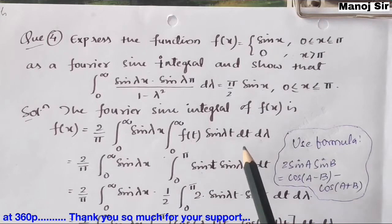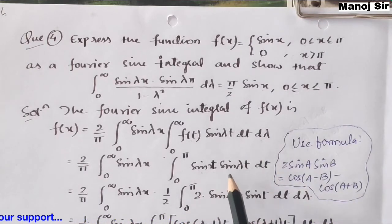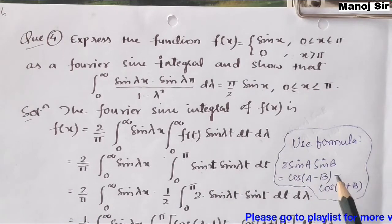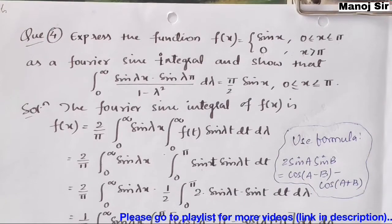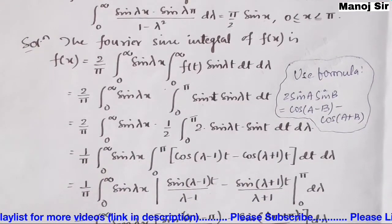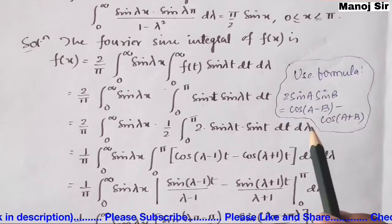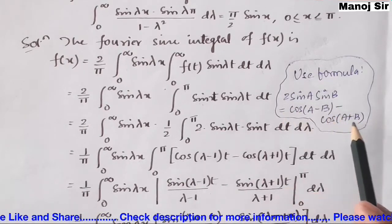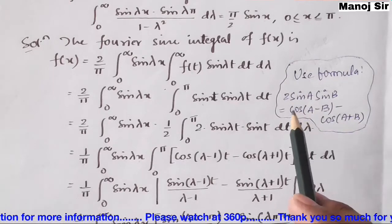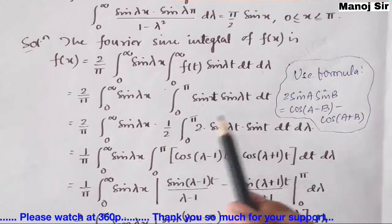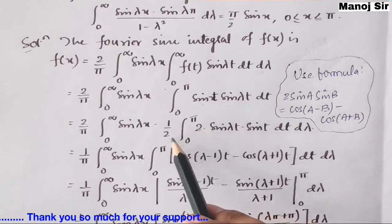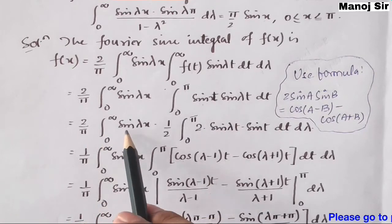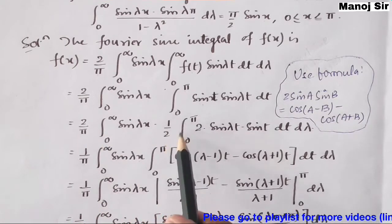Now we have sin(t) · sin(λt), so we use the identity: 2 sin(A) sin(B) = cos(A − B) − cos(A + B). This is a very important formula. To apply it, we multiply and divide by 2.